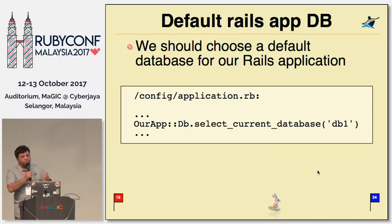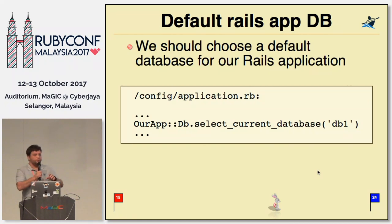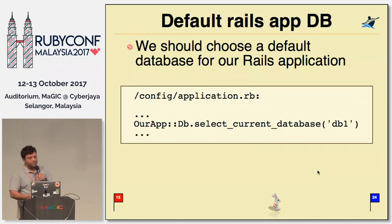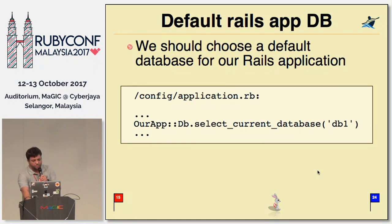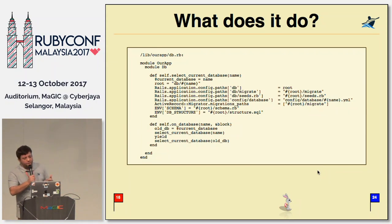The next thing: we should choose a default database for our Rails application, because although we have different databases, there should be one of them for holding all the Rails app-related things. For that purpose, we have a module in our app named DB, which has a method called select_current_database. Its short implementation simply changes the Rails application config paths.